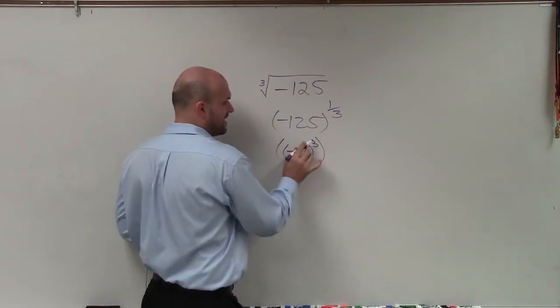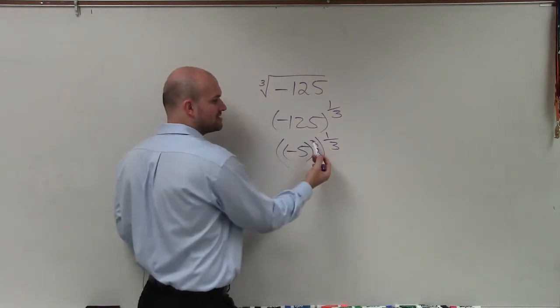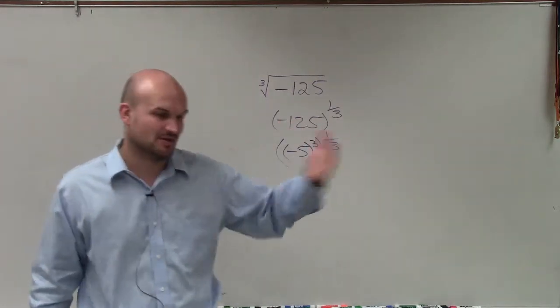So negative 5 cubed. Then I'm going to take negative 5 cubed and raise that to the 1/3 power. Now, using my rules of exponents, when I have a power raised to another power, which in this case I do, I just multiply the exponents.